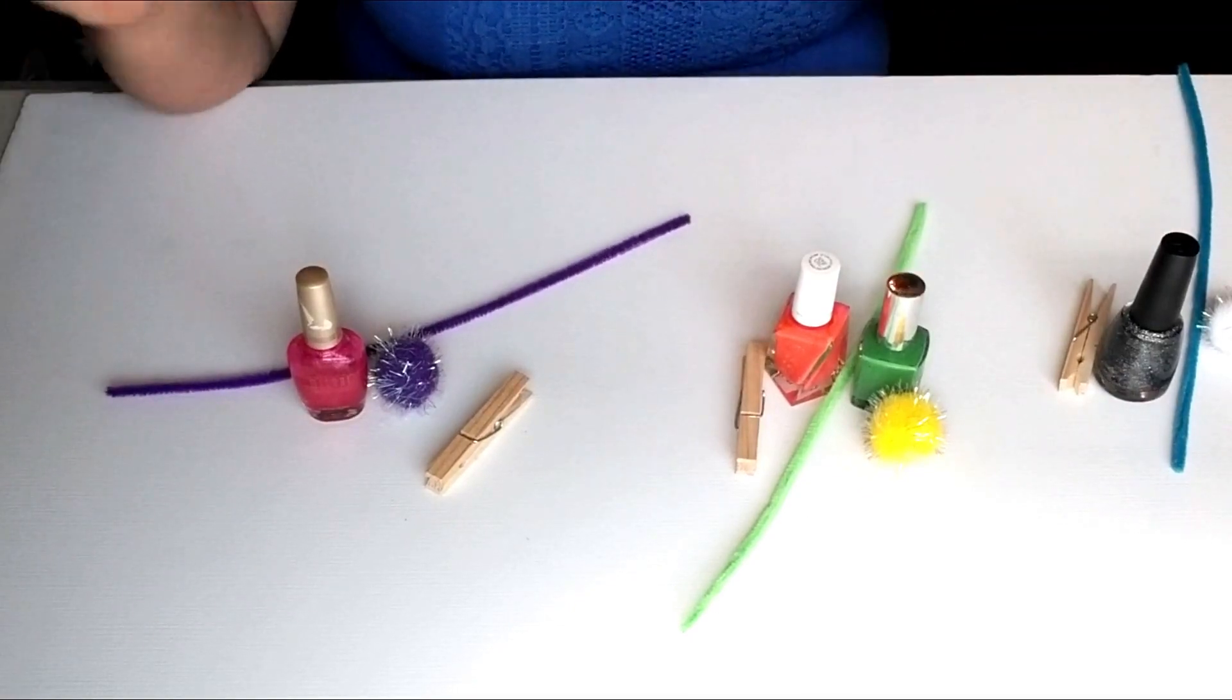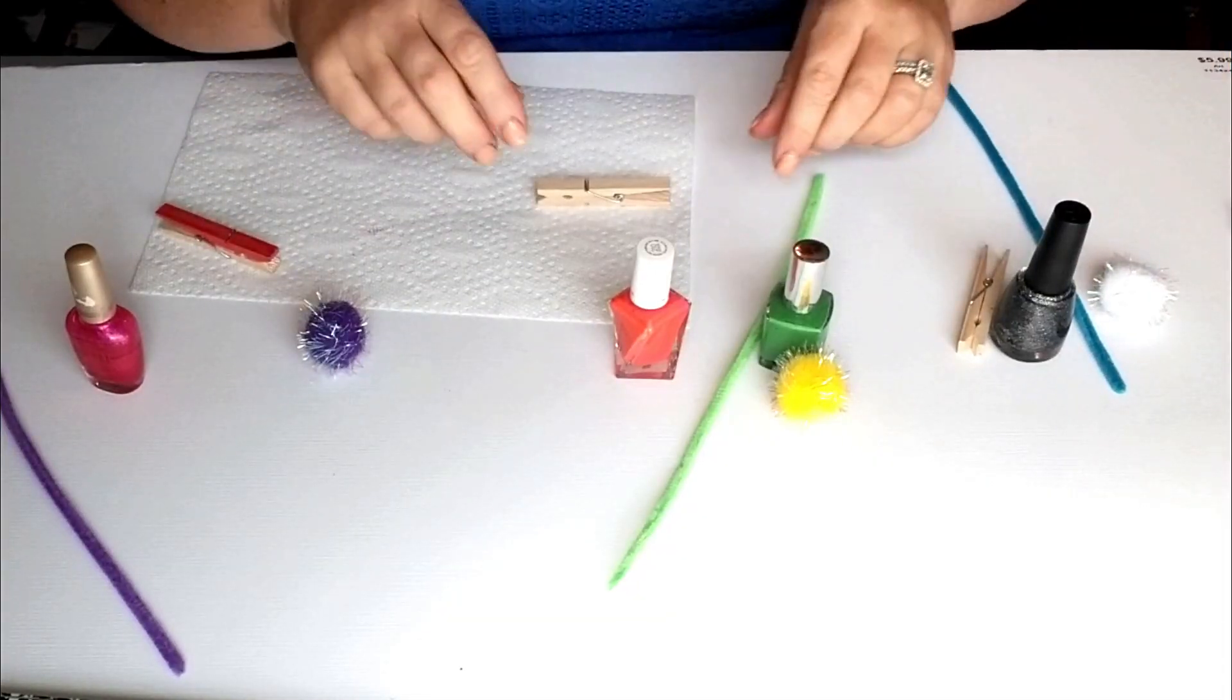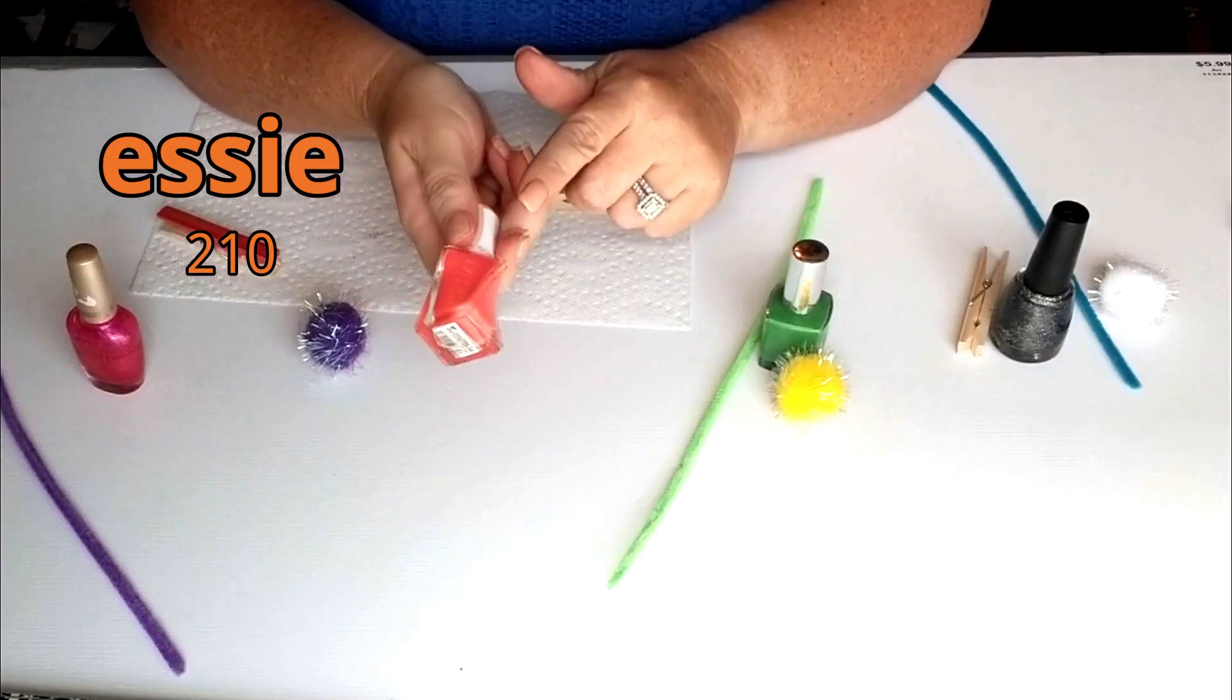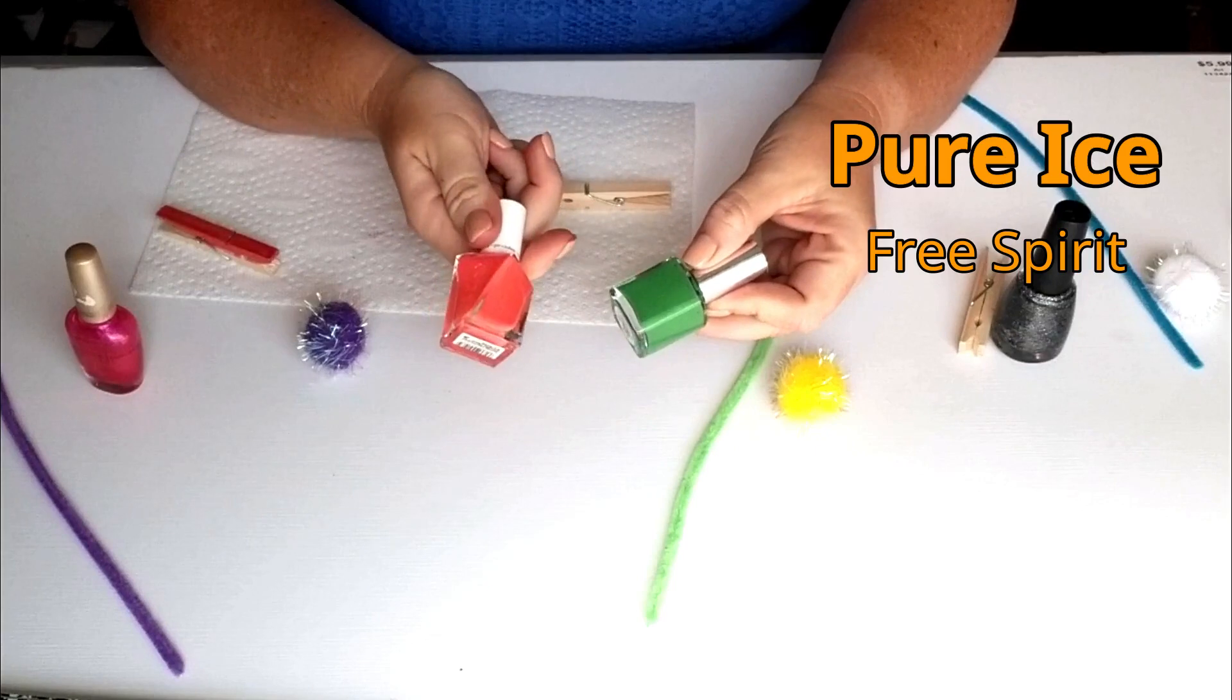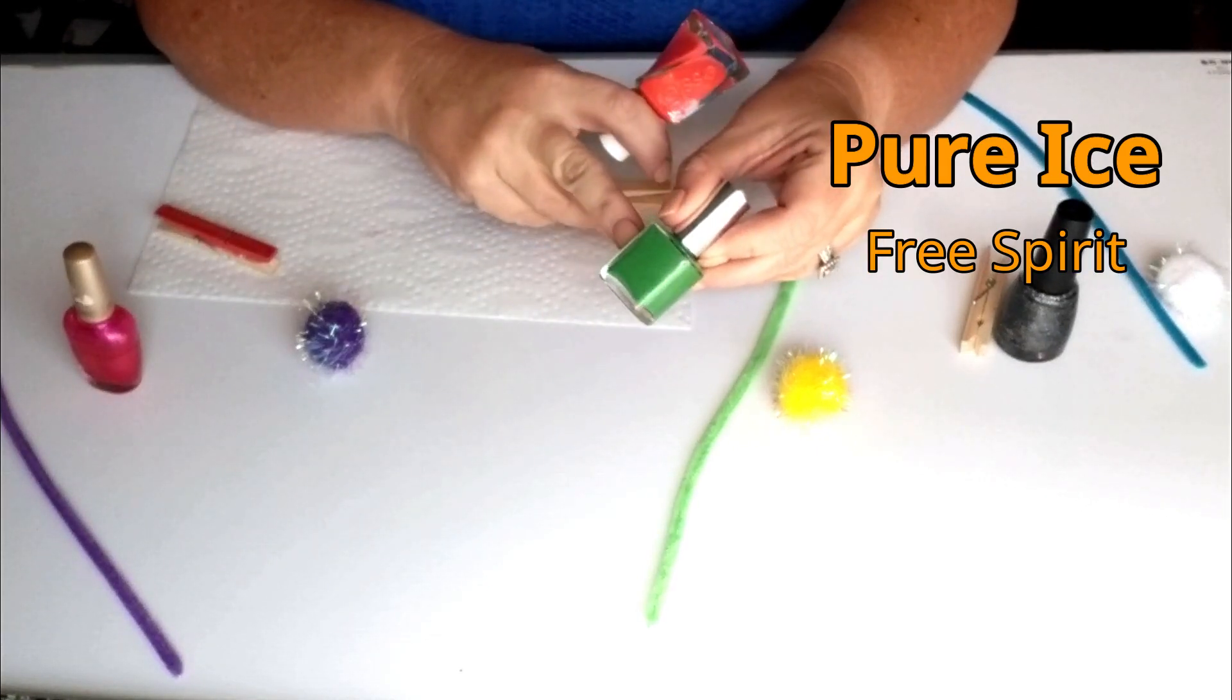So let's get started. This one will be my base coat and this one I'm going to use to make funny looking polka dots all over it.